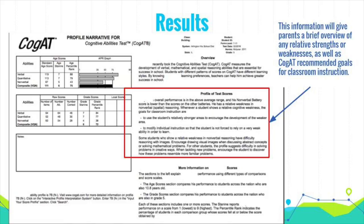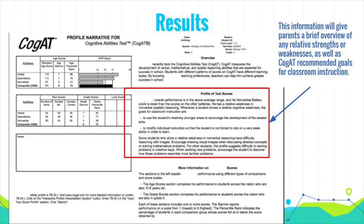The next important area is the middle section on the right — it's a profile of the test score. Basically this area gives a brief overview of the student's relative strengths and weaknesses in the particular batteries, and then it also gives some recommended goals for instruction. So if you receive a phone call asking what you're doing for a child based on how they did on the COGAT, you can glance at those goals and see where you want to take it.